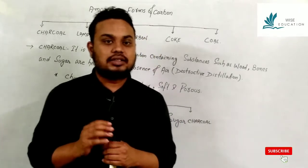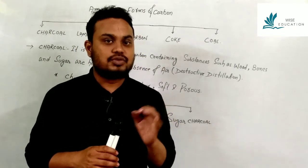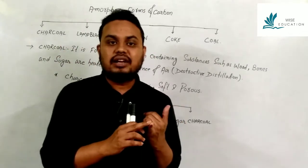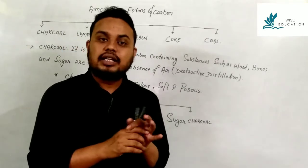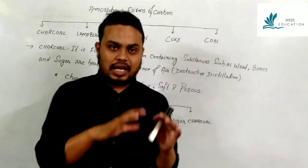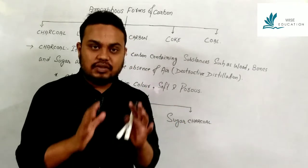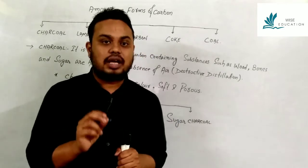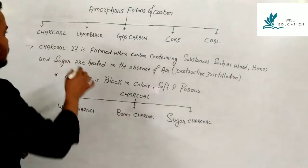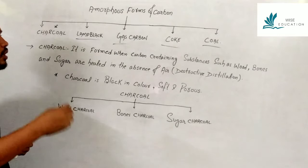Welcome back to the third lecture of Carbon and Its Compounds. In the previous classes, we completed up to crystalline forms of carbon. Today we will discuss amorphous forms of carbon. In crystalline form, particles are regularly arranged in a well-defined pattern, whereas in amorphous form, particles do not follow a regular pattern. Amorphous forms of carbon are: charcoal, lamp black, gas carbon, coke, and coal.